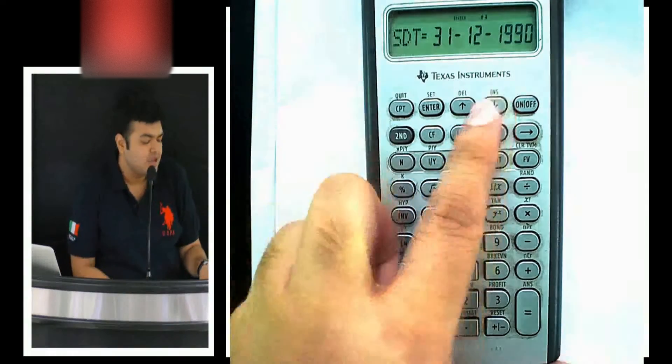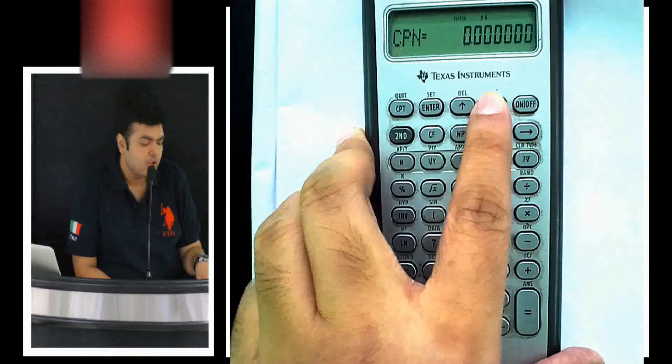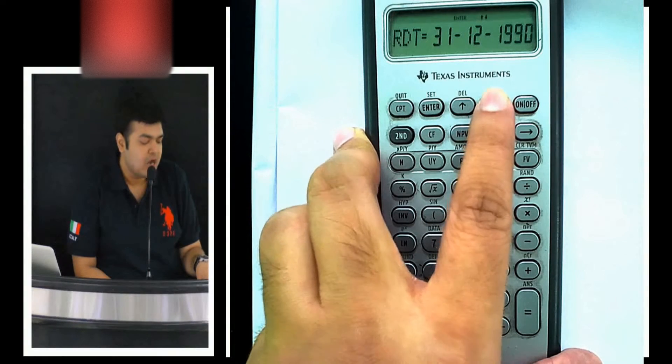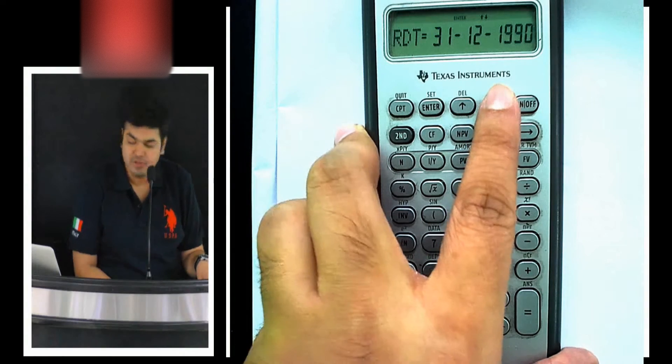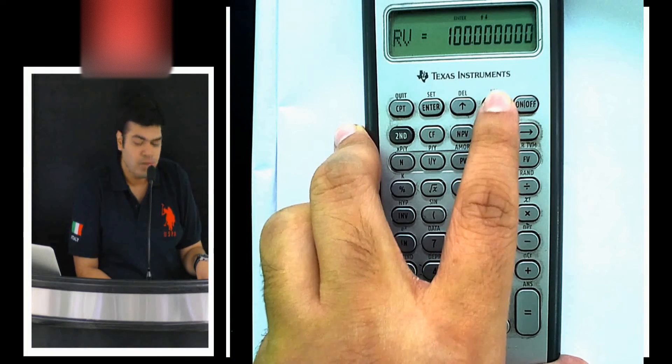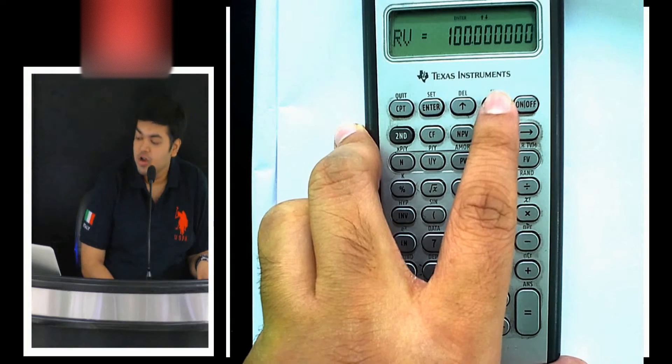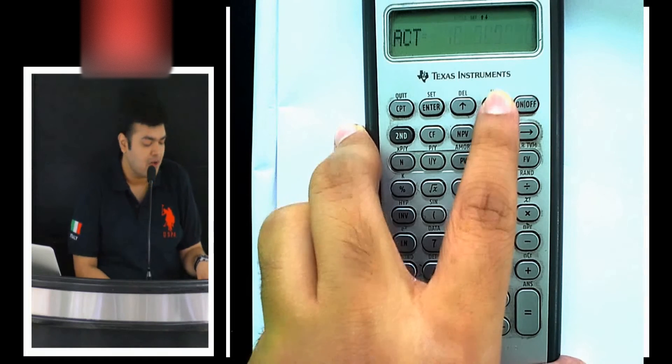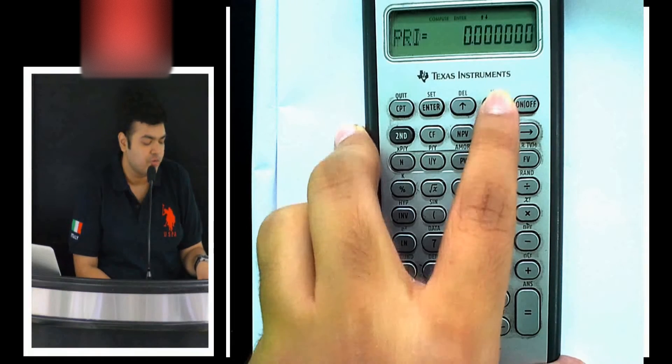Settlement date is SDT. Coupon is the amount of coupon. RDT is the redemption date, the maturity date of the bond. RV is the redemption value, the percentage of par value. I'll do a sum and work it out for you.